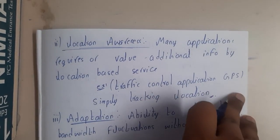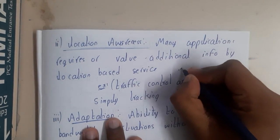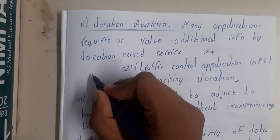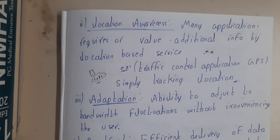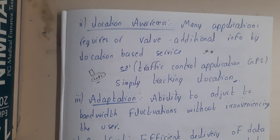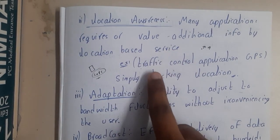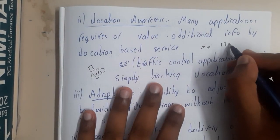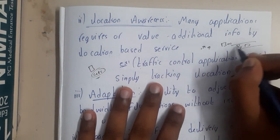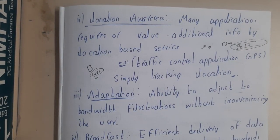Similarly, location awareness — using GPS in our mobiles, applications like Google Maps update based on our location using satellite images. Many applications value additional information through location-based services. Even traffic control systems nowadays scan roads using cameras, checking road status and adjusting based on vehicle density. So location awareness enables traffic control and many other things.